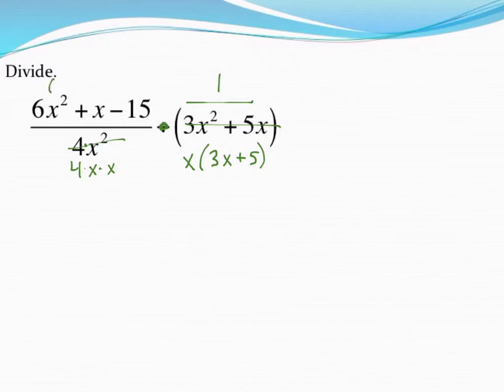This factors into 3x plus 5 and then 2x minus 3. Again, if you want to see how that works, you can either ask me in class or go back and watch a box method factoring video. And then I'm going to cross out what I just factored.